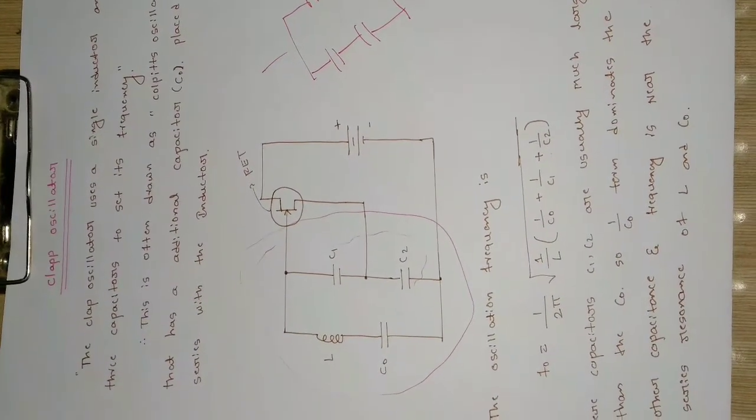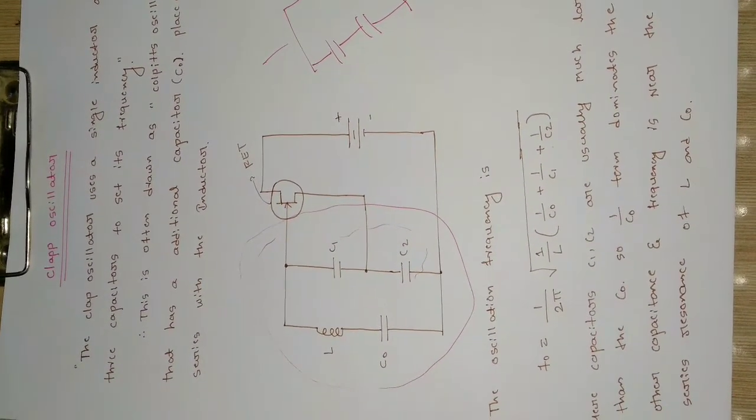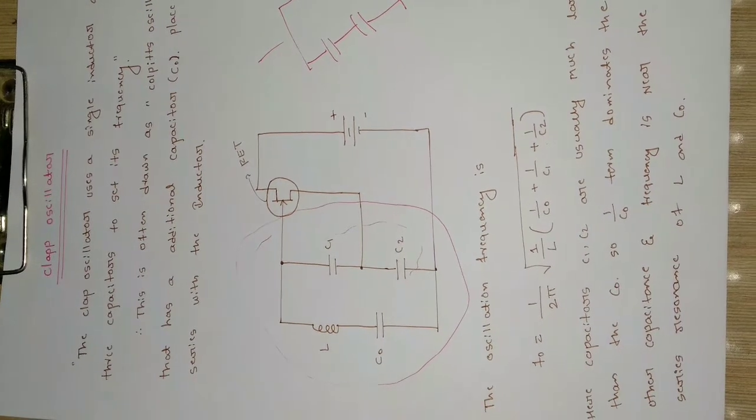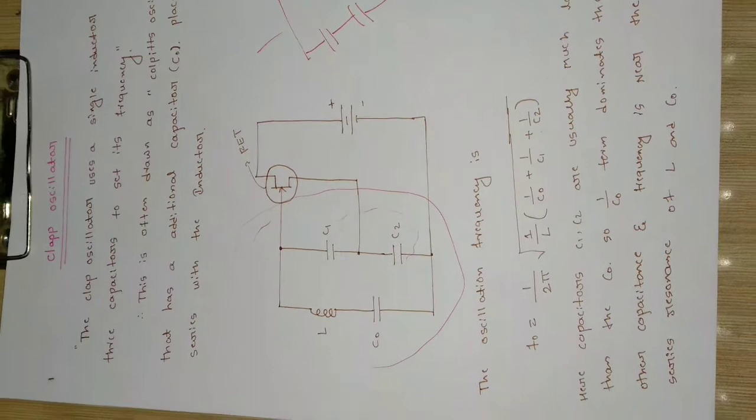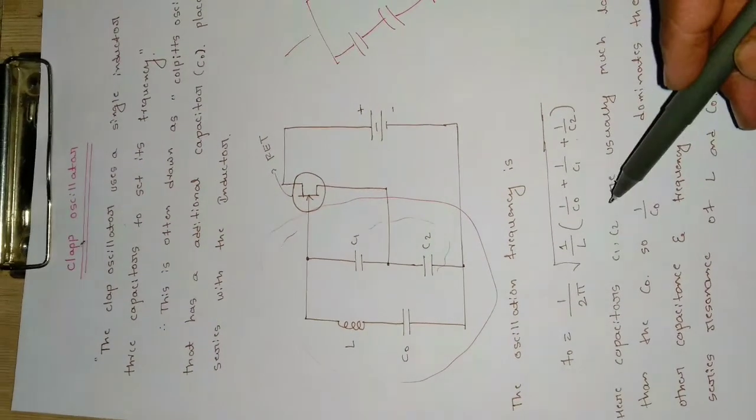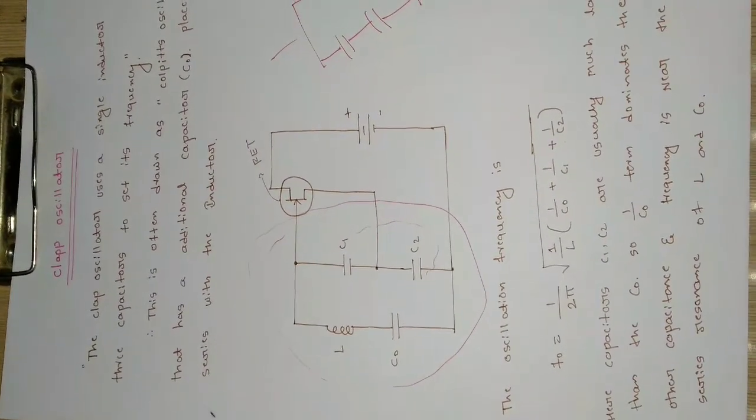The oscillation frequency is F0 = 1/(2π√(L(1/C0 + 1/C1 + 1/C2))), where L is the inductance and C0, C1, C2 are the capacitances of the capacitors.